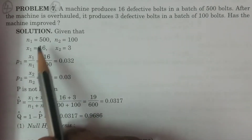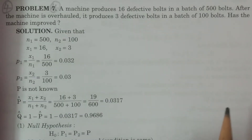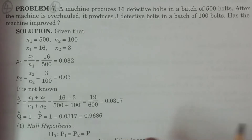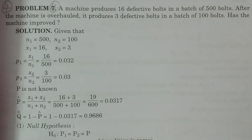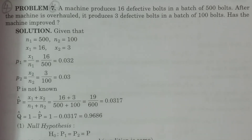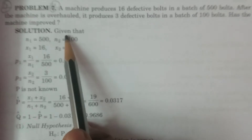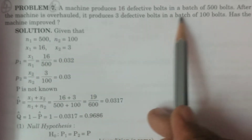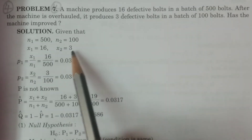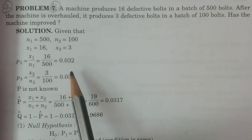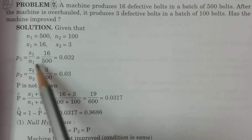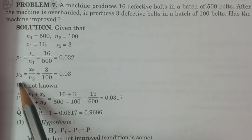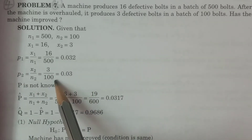The question is: has the machine improved after overhauling? The given data is n1 = 500, x1 = 16, n2 = 100, x2 = 3. Calculate the sample proportions: p1 = x1/n1 = 16/500 = 0.032. Similarly, p2 = x2/n2 = 3/100 = 0.03.